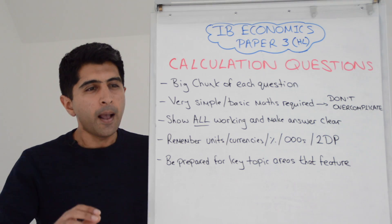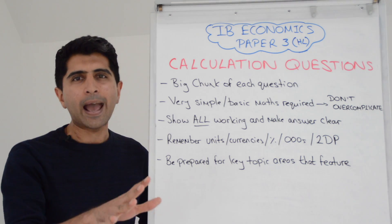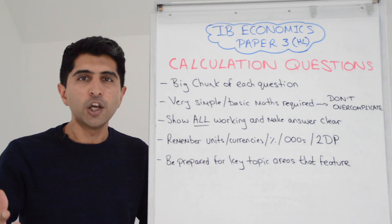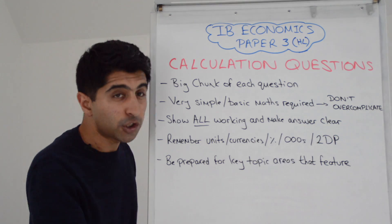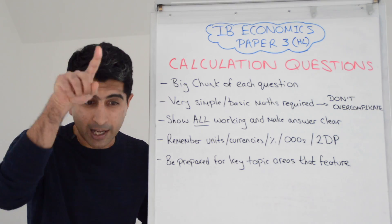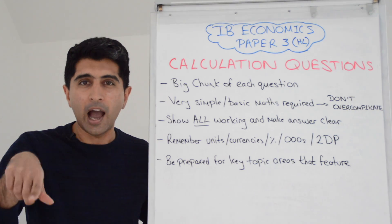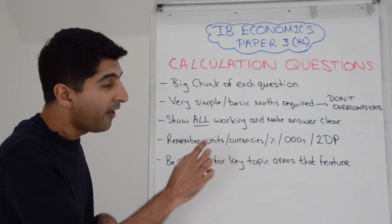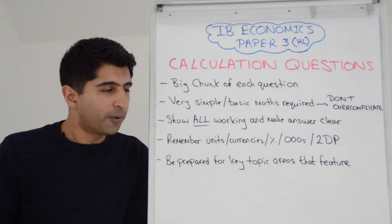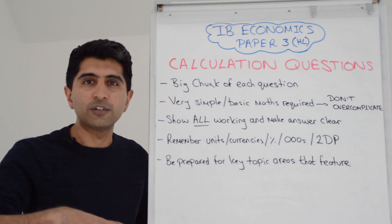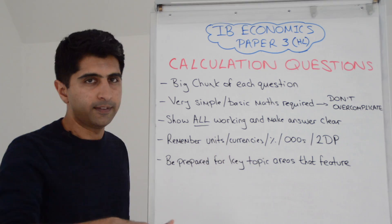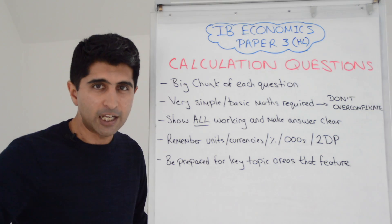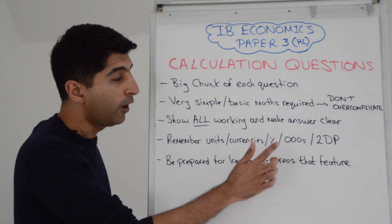So if there is an equation needed, put the equation down, then put the numbers into that equation, and then show your correct answer and make sure your answer is clear. I recommend circling it, highlighting it, so examiners know what they're looking for — make their life easy. The other way you've got to make sure you get full marks is not to forget your unit. So if it's a currency like dollars, make sure that's there. A percentage or a percentage change, make sure that's clearly written down.